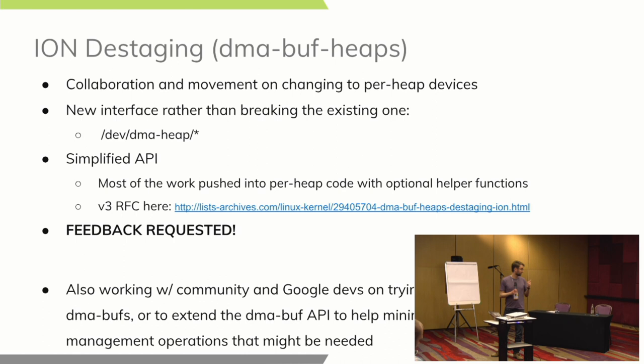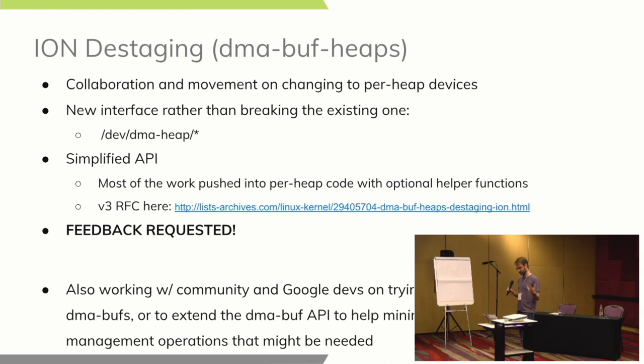Since the API is a lot simpler, at least in the current RFCs, there is some concern — particularly around secure heaps — whether we've oversimplified it and made it difficult to handle some of the needs of secure heaps. Part of the problem with getting ion upstream is we keep getting tangled into trying to solve all the problems at once. If DMA heaps can't work for all secure heaps, maybe secure heaps need their own interface.